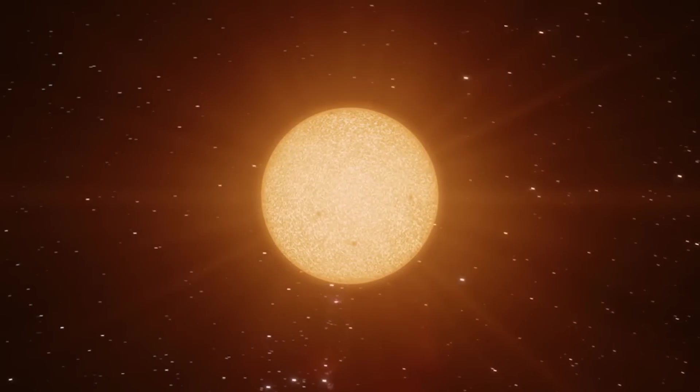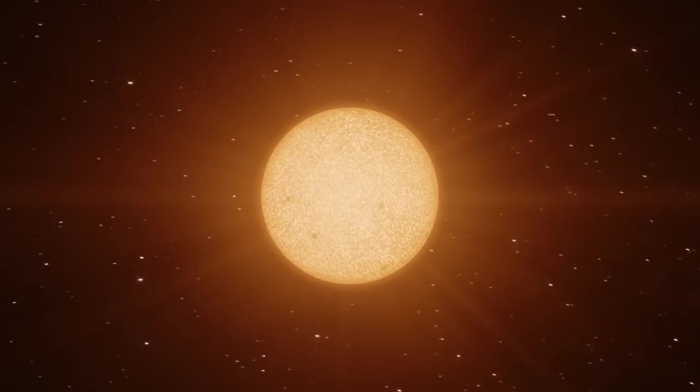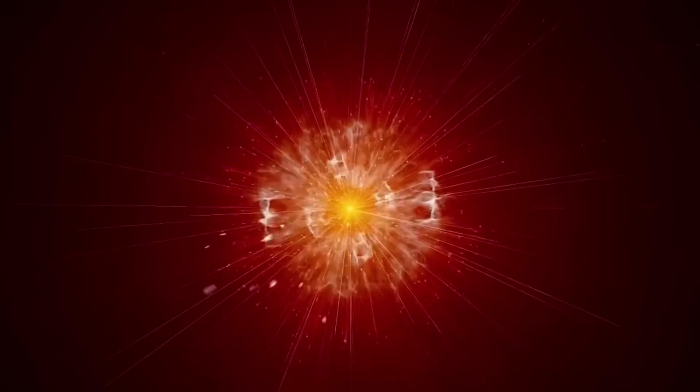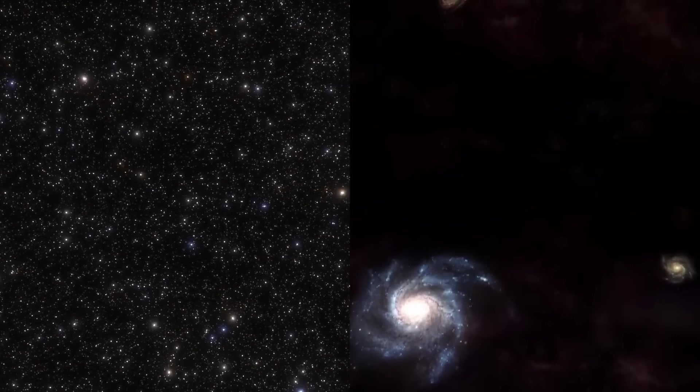The Big Bang mainly revolves around how the universe started as a hot, dense, and infinitely small point called a singularity that, in an instant, started expanding faster than you could imagine. As it expanded, it cooled down, and tiny particles like protons and neutrons started to stick together to form atoms, which eventually joined together to create stars and galaxies.